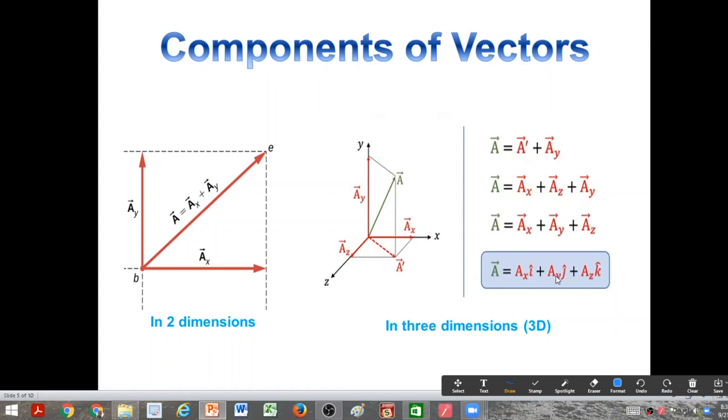Ax is the magnitude of the x component and i represents the direction along x-axis. Similarly, Ay is the magnitude along the y-axis and j represents the direction along y-axis. Az is the magnitude along the z-axis and k represents the direction. i, j, and k are called unit vectors - we'll talk more about it later.